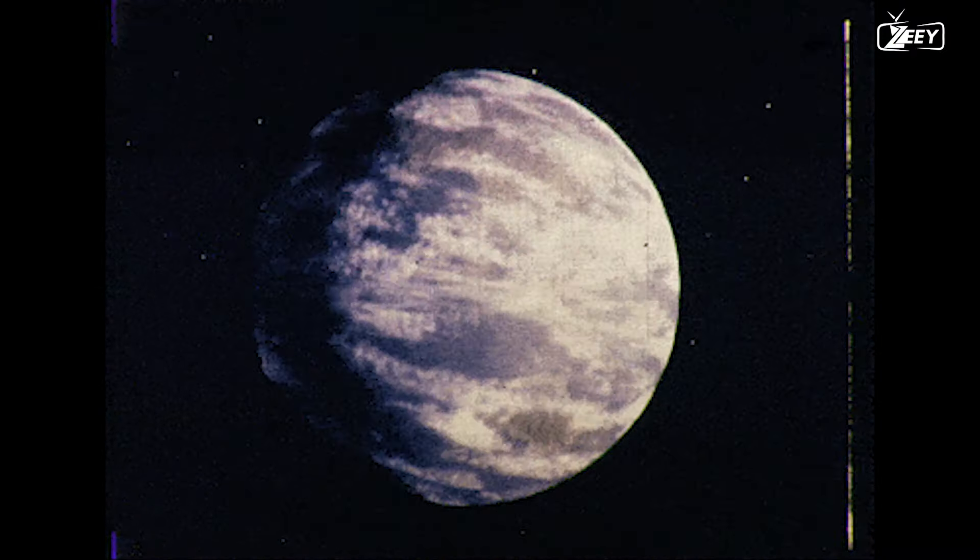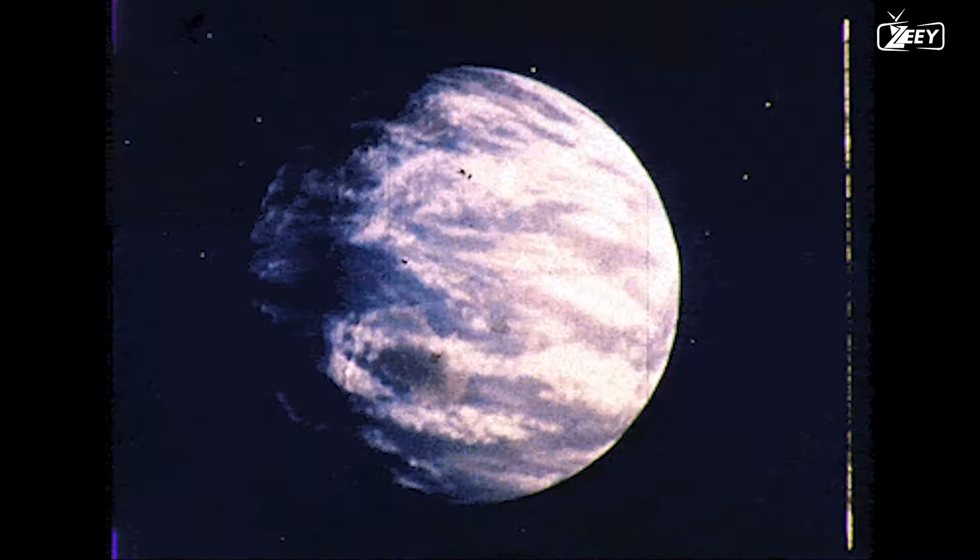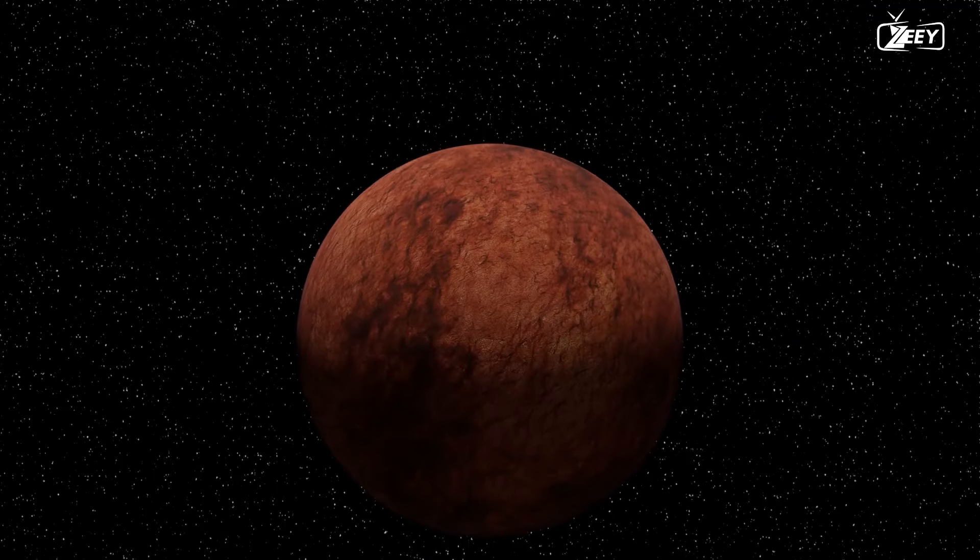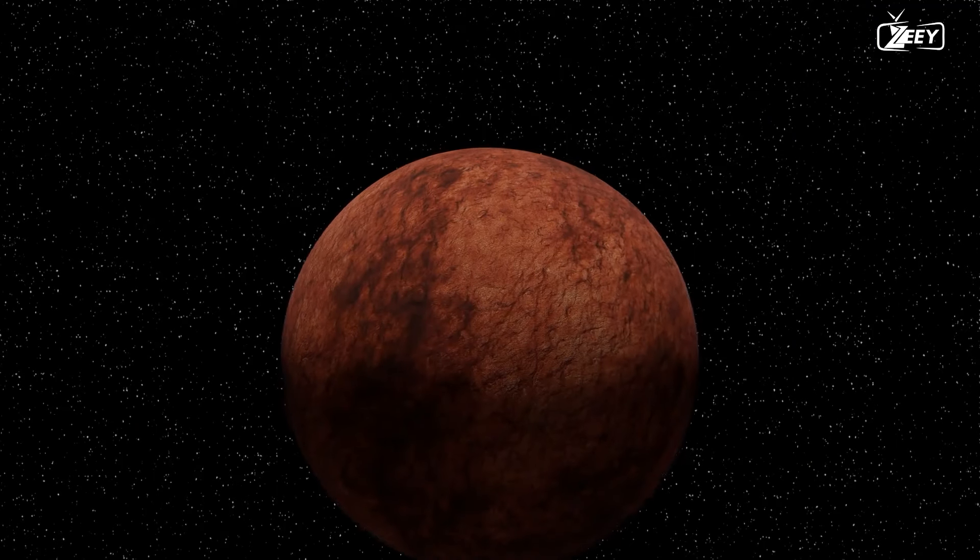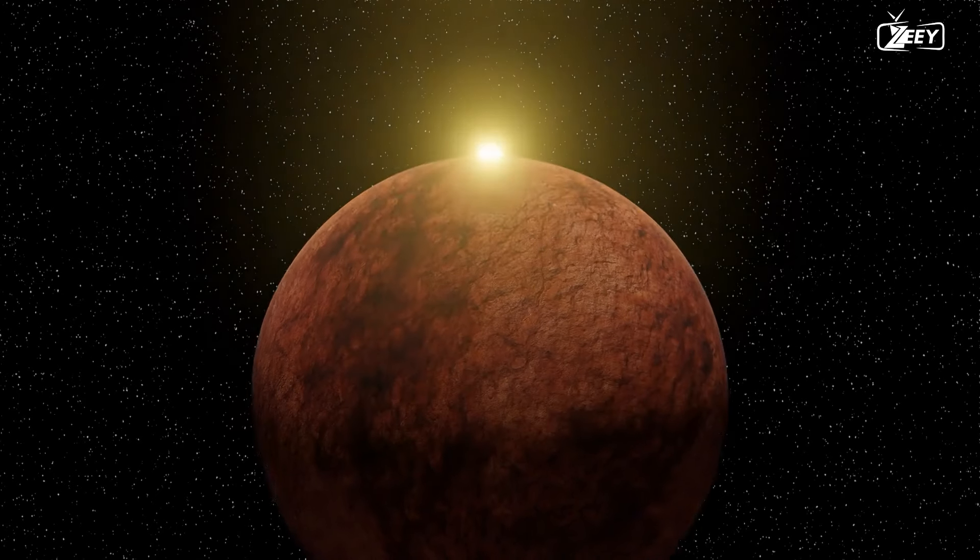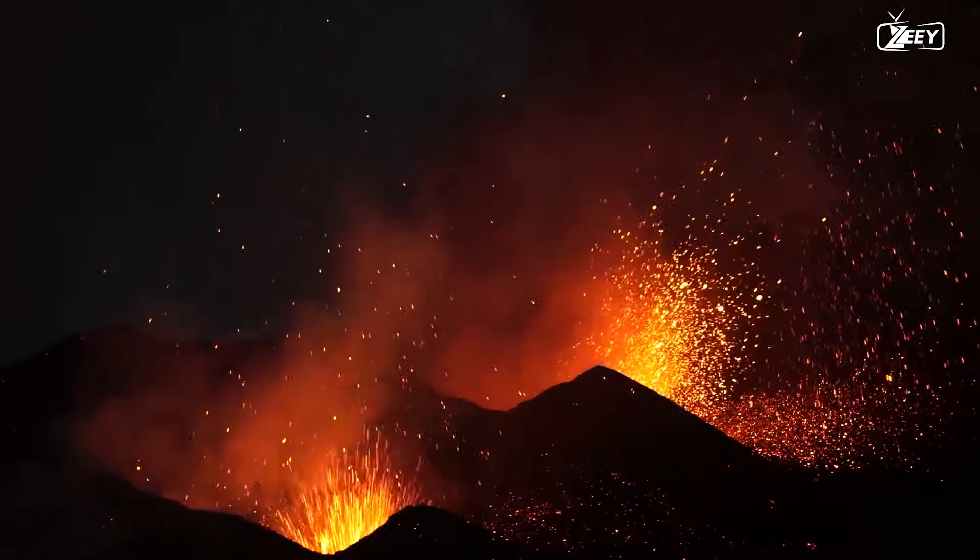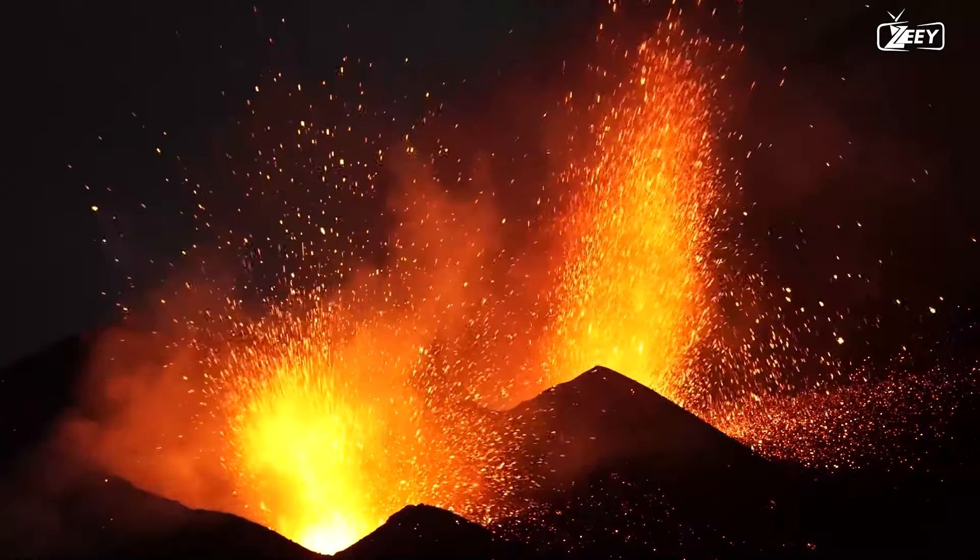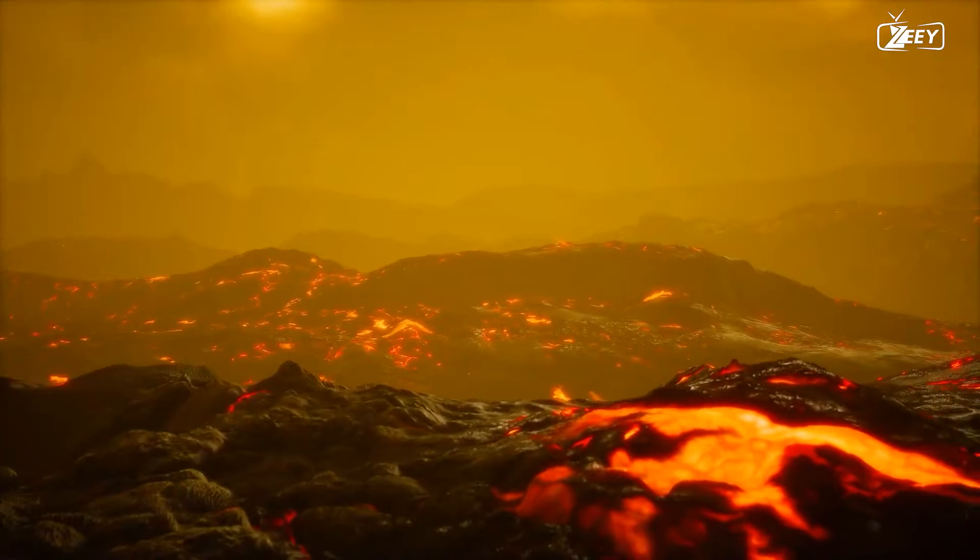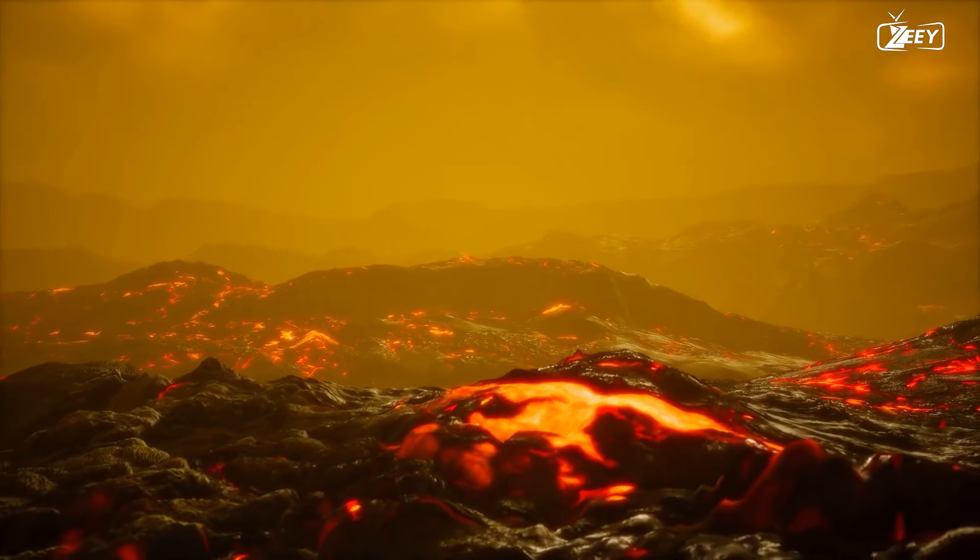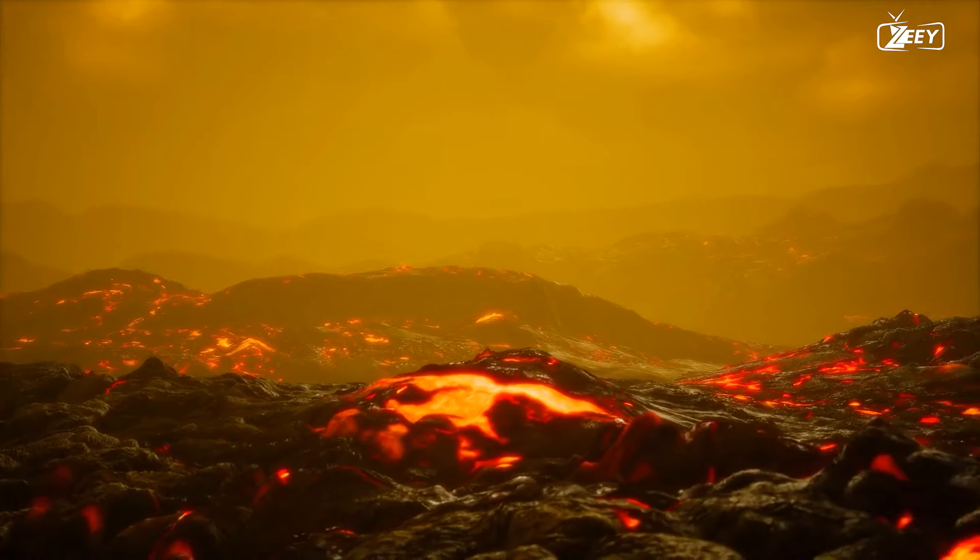The geological history of Venus has also contributed to its metamorphosis into a hellish world. Venus has a very slow spin, which implies that a single day on the planet lasts longer than a year. This slow rotation, combined with the tremendous heat, has resulted in immense volcanic activity on the planet's surface. Sulfur dioxide, which adds to the greenhouse effect, is released into the atmosphere by volcanic activity on Venus. Volcanic activity on the planet has also resulted in the production of enormous plains of solidified lava which spanned over 80% of the planet's surface.